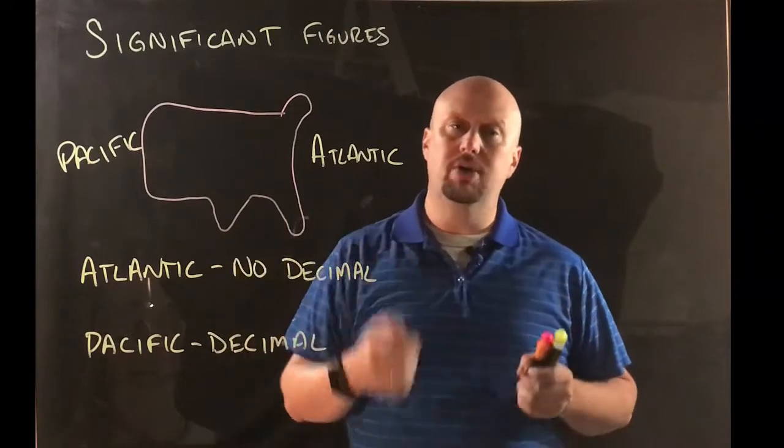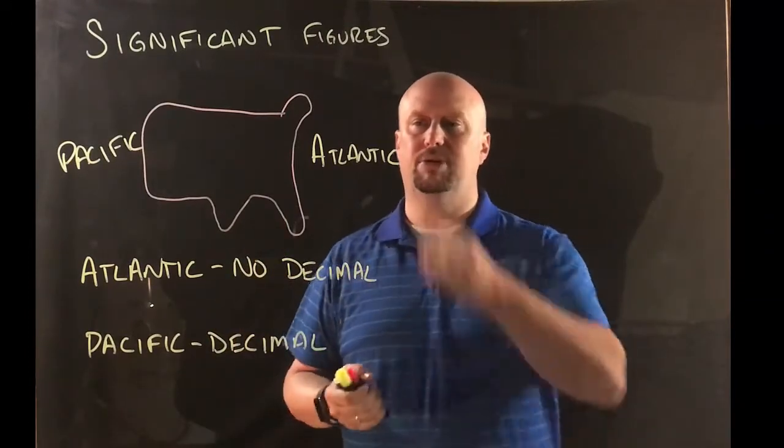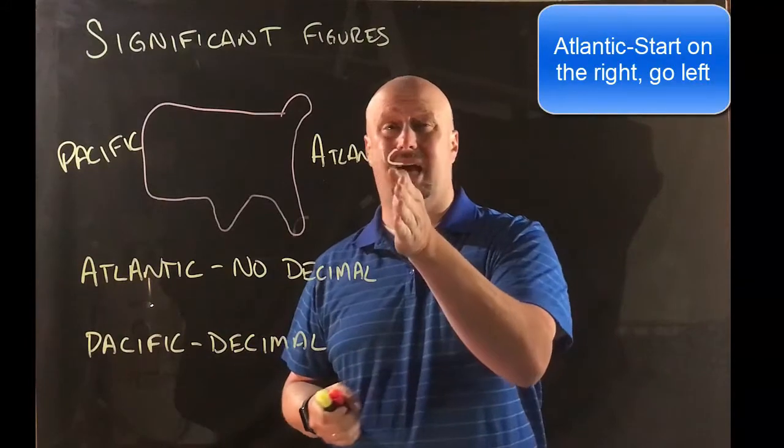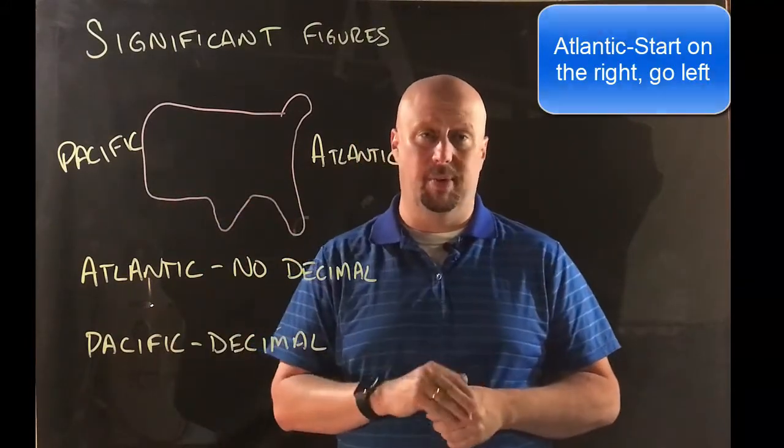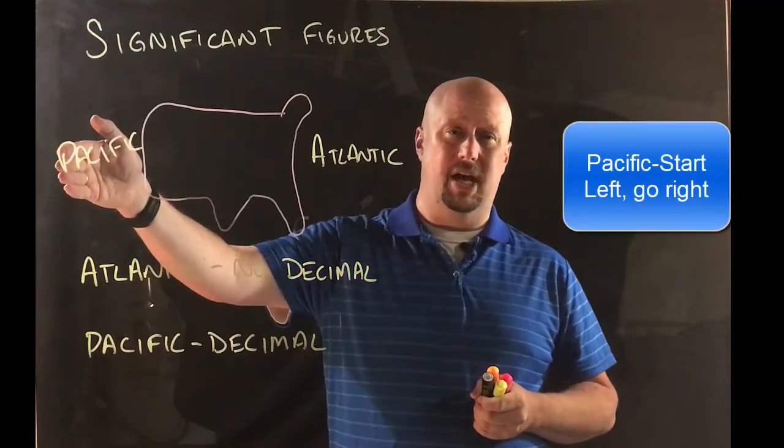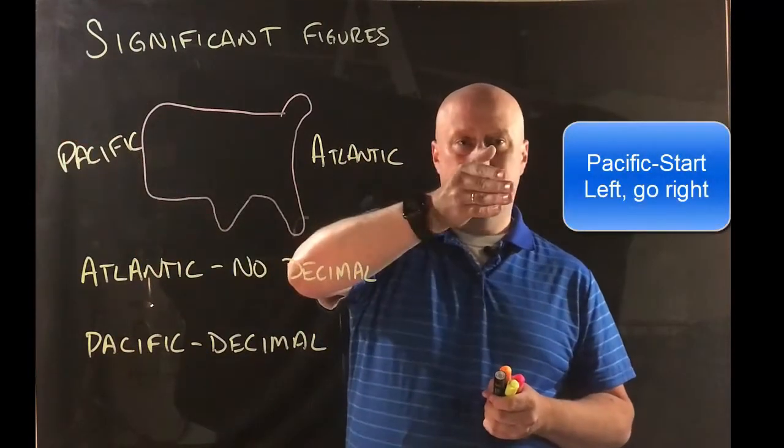Essentially here's the way it works. If there's no decimal in the number you're going to go from the Atlantic side which means you're going to start at the right hand side and go to the left. If there is a decimal in the number that's Pacific so that means you start with the left hand side and then go to the right.